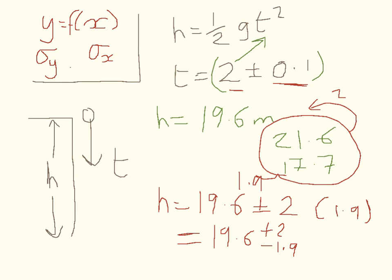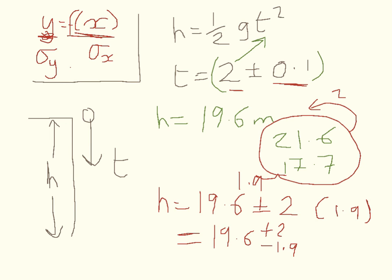So that's a simple way. If you want to work out the uncertainty in something which is a function of something else, just plug in your best fit value of that to work out the best fit value of this. Then plug in your best fit value plus the uncertainty here and work out the best fit value plus uncertainty here. The difference between the best fit value and the best fit plus uncertainty gives you the error bar.